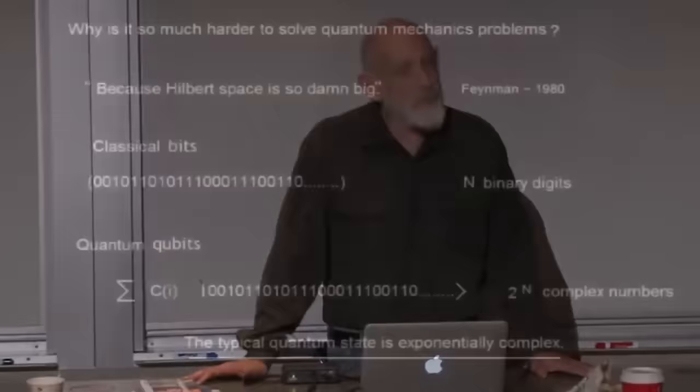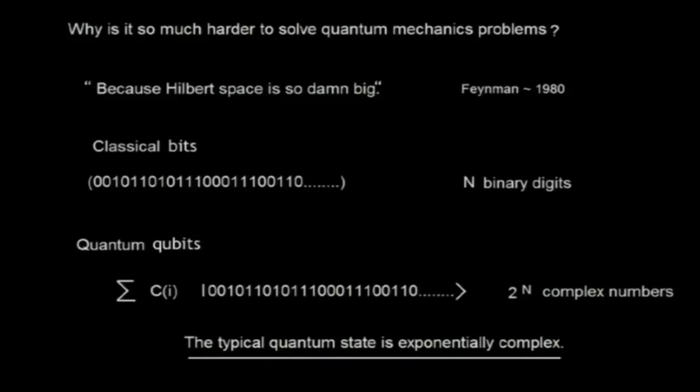Let me start with an observation of Feynman's from around 1980. He asked himself why it is so hard to solve quantum mechanical problems—meaning, why is it so hard to simulate them on a classical computer? And his answer, a direct quote: 'Because Hilbert space is so damn big.'